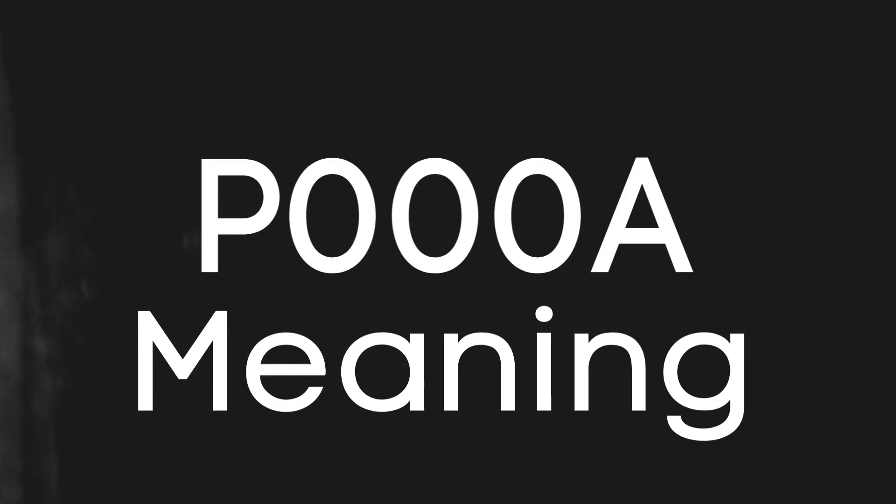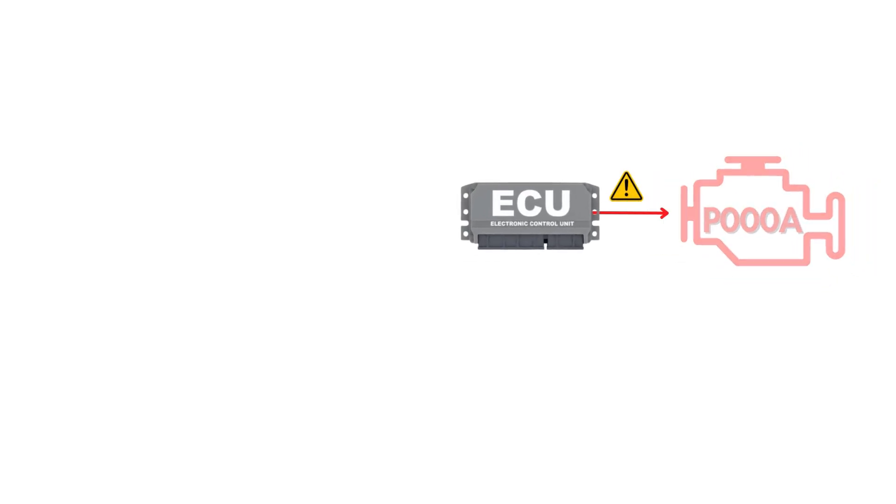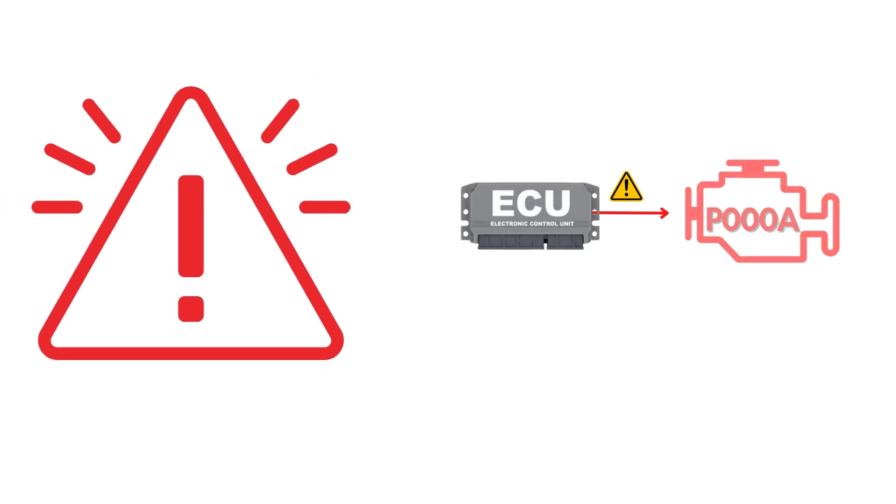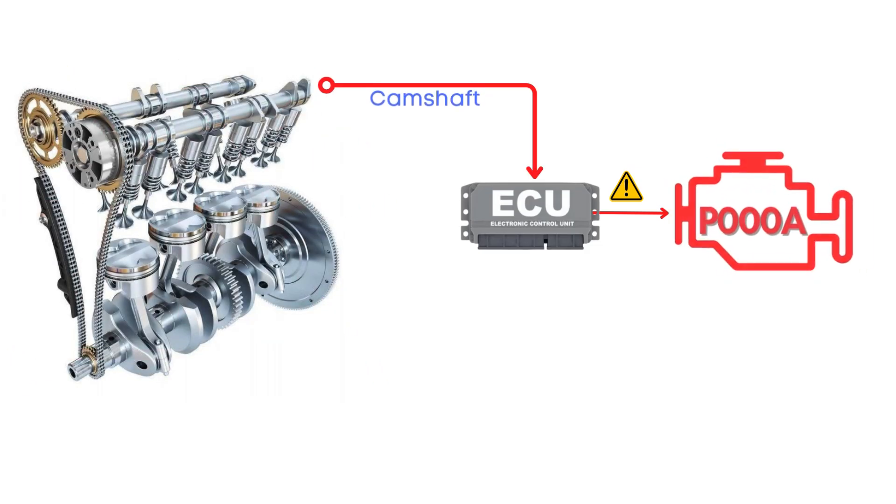First things first, let's break down what the P000A code actually is. This code gets triggered when the engine control module detects that the camshaft isn't properly aligned with the crankshaft.